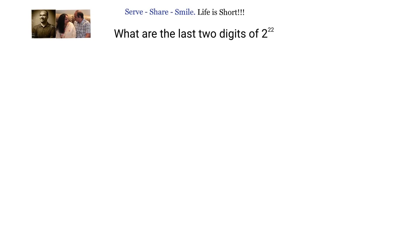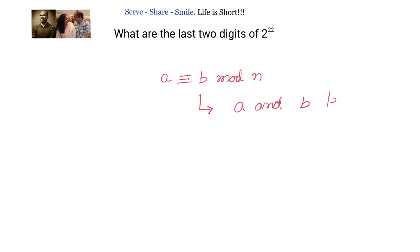The first statement we will learn is: a and b are congruent modulo n. The meaning of that is a and b will leave the same remainders when divided by n.